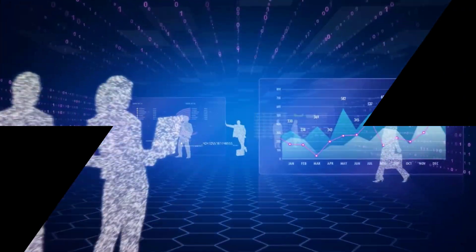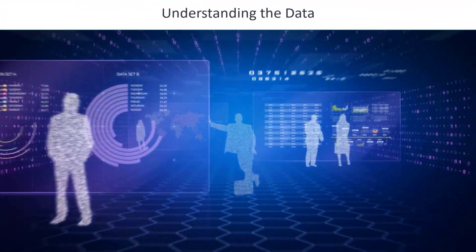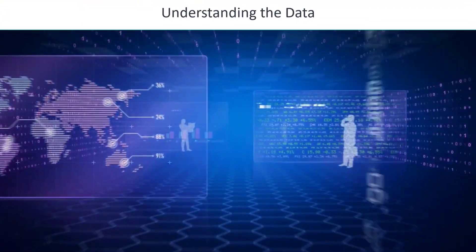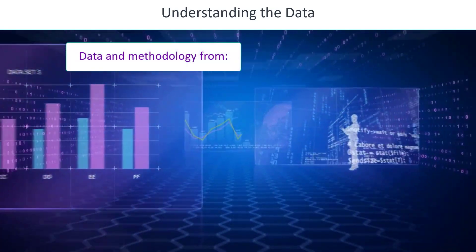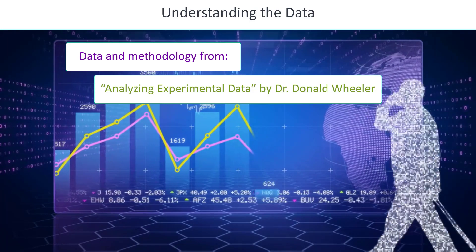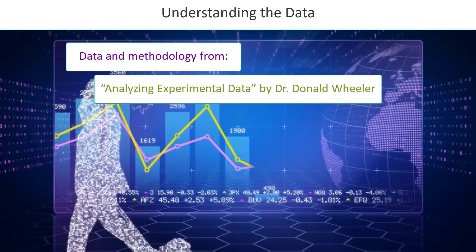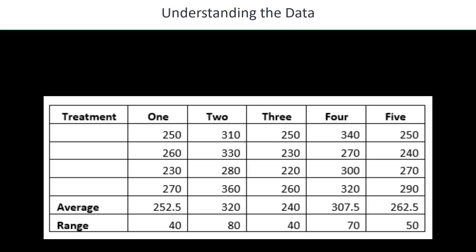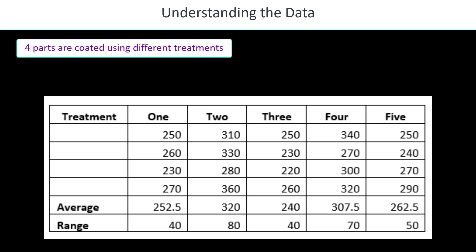We're going to begin by understanding the data. The data and the methodology, the analysis of range and analysis of means, comes from Dr. Wheeler's book, Analyzing Experimental Data. He shows the data that we're going to use, as well as the details of how you do the calculations.